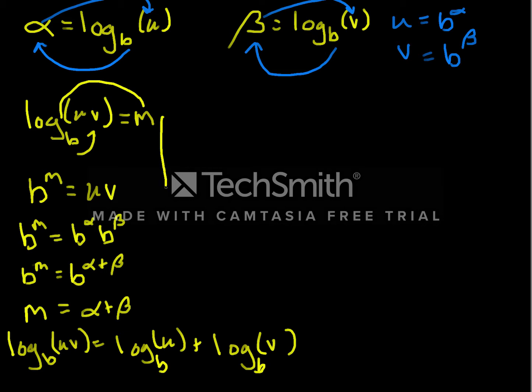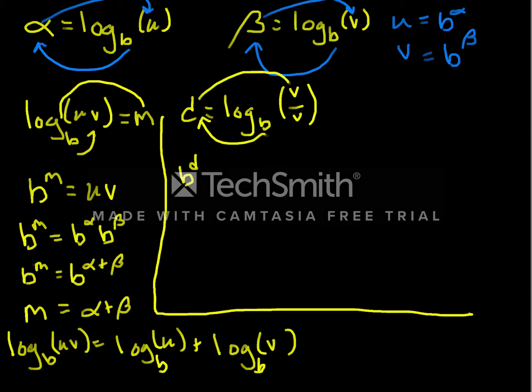For almost identical reasons, we can look at what division is. So let's say that d is equal to log base b of u divided by v. If you had to guess, remember that in exponents, division becomes subtraction. So it shouldn't be surprising. So we get that b to the d, and using our rules, that b raised to the d power has to be equal to u over v. So this is equal to u divided by v. But what is u and v? That's equal to b to the alpha divided by b to the beta.